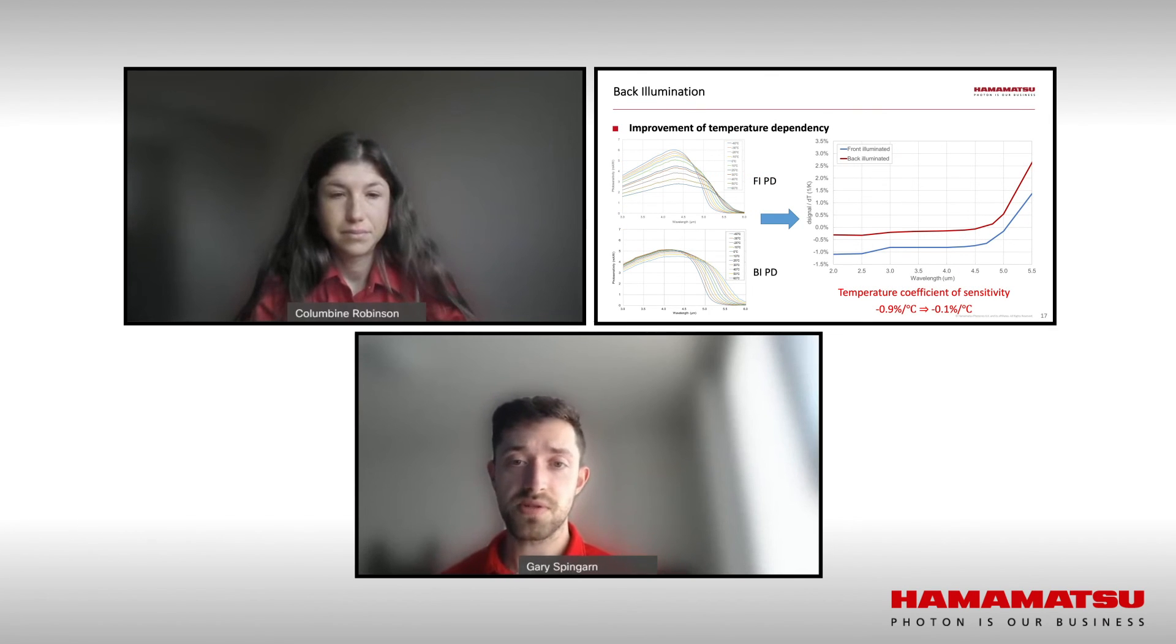Next comes back illumination. As we previously discussed and Columbine mentioned, photonic detectors have a noise floor, and then there is variance introduced through temperature changes. Through a proprietary structure, Hamamatsu now offers detectors with back illumination. This brings the temperature factor from 0.9% change in sensitivity per degree Celsius to 0.1%. This is truly an innovation and will definitely open doors to new applications, especially in portable instruments, especially because they require those small form factors and no cooling.